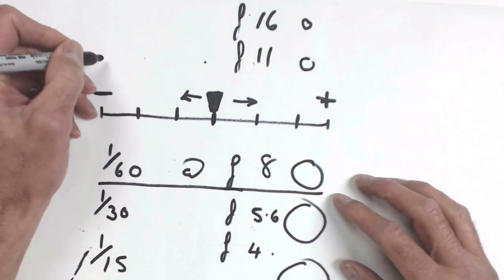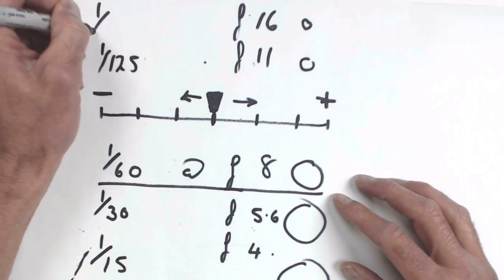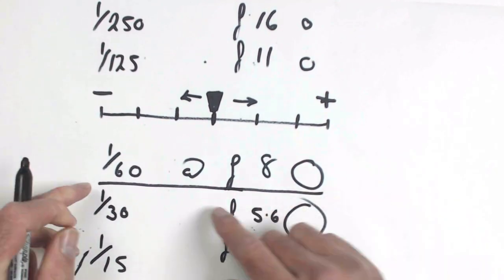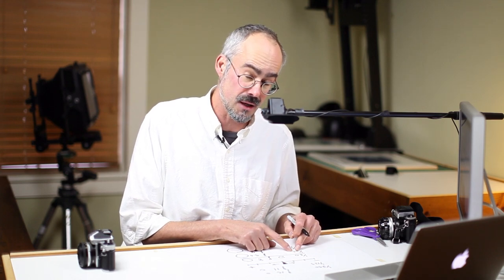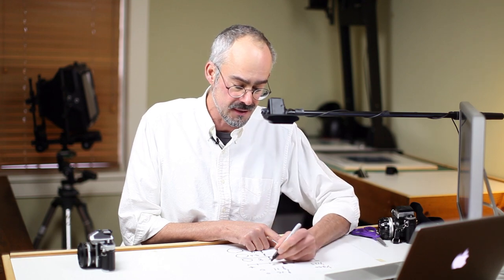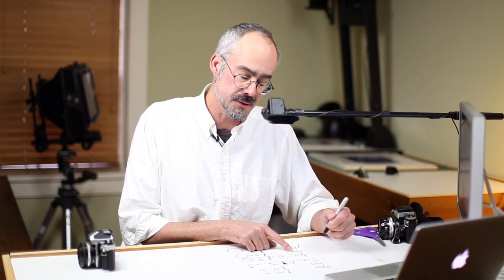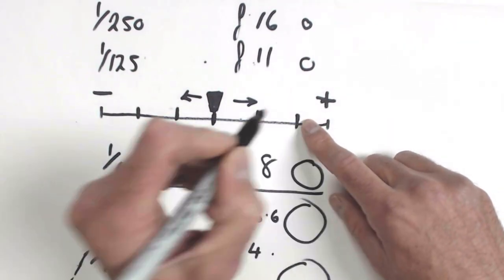Go the opposite direction to one one hundred and twenty fifth of a second, then one two hundred and fiftieth of a second. Now, from a sixtieth to a thirtieth is twice as much light. The shutter is open for twice as long. We should be overexposing by one stop. And from thirtieth to a fifteenth should be overexposing by another stop.